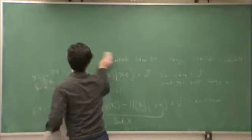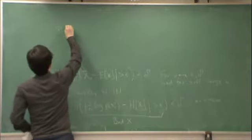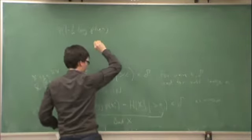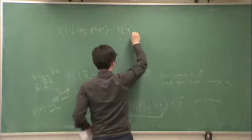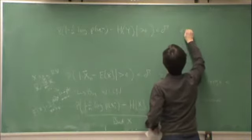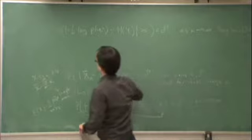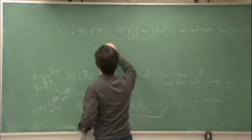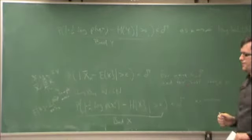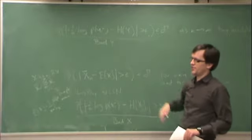We can write something similar for y. The probability of the magnitude of minus one over n times log P(y_1^n) minus H(y) being greater than epsilon is less than delta as n goes to infinity, by the Weak Law of Large Numbers. We designate this event as 'bad y' — the criterion is unsatisfied because y is individually atypical.